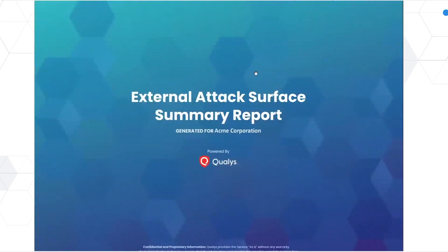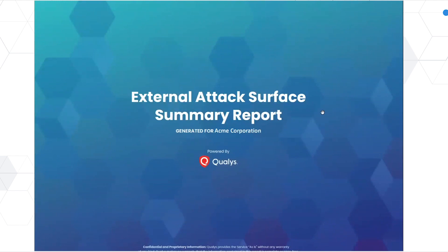This is an executive-level type of report that you can hand over to your CISO, or if you are the CISO, you can use it to work with your team in regards to what you need to prioritize on your external-facing surface.